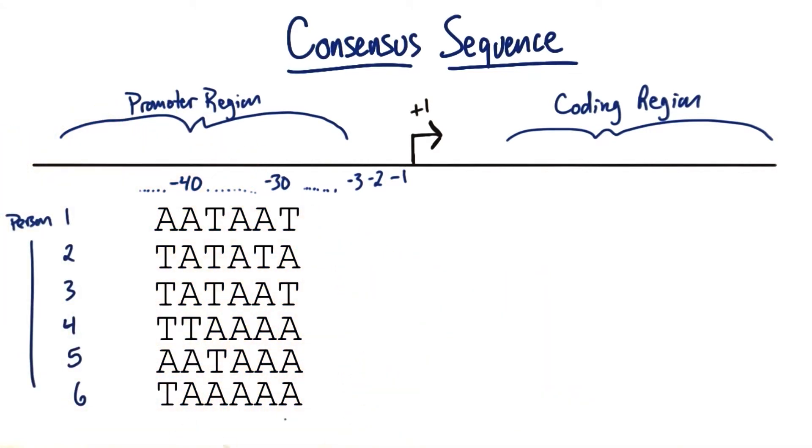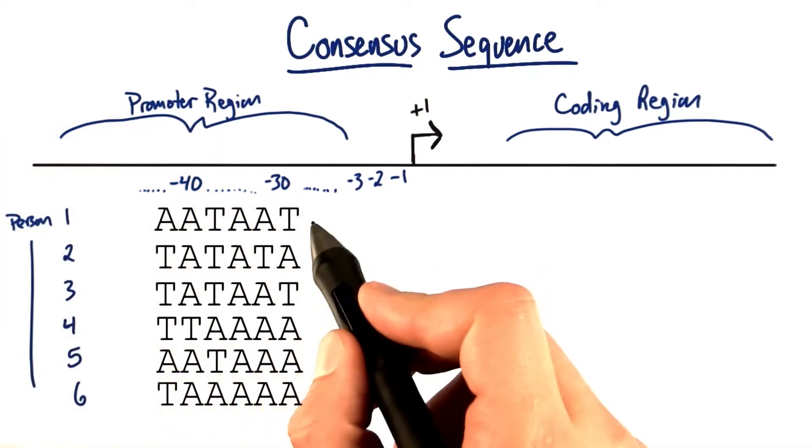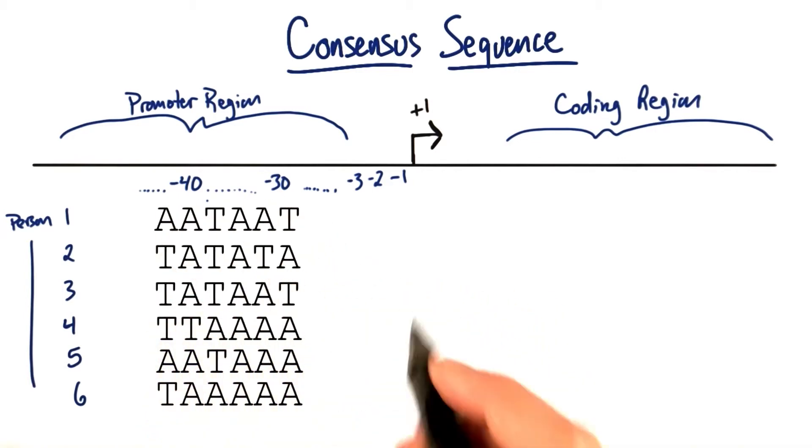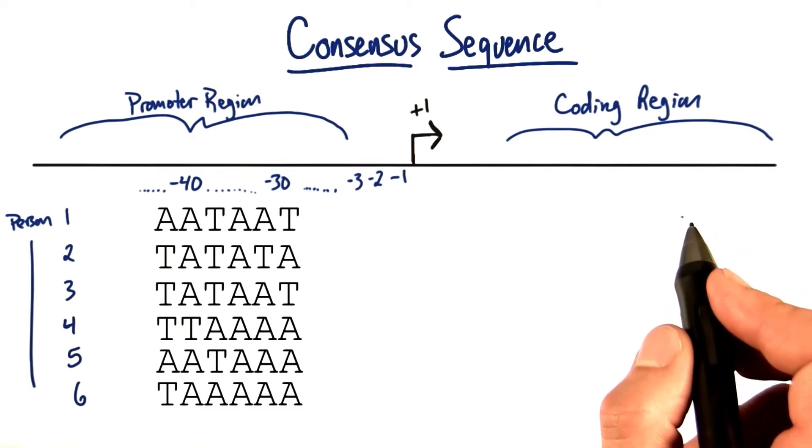So we have six different people and this is their sequence, the letters in their promoter region at this minus 30 to minus 40 region in front of a specific gene in their genome.